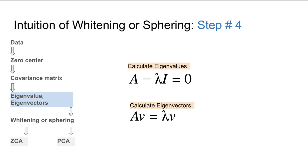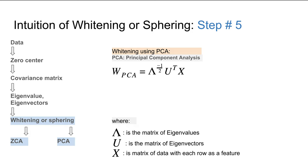The next step is calculating the eigenvectors and eigenvalues. The equation used is (A - λI)v = 0, where A is the covariance matrix, λ is the eigenvalue, and I is the identity matrix. First we solve for λ, then plug that value in to solve for the eigenvector v. After that, we can substitute the eigenvalues and eigenvectors into the whitening formula.